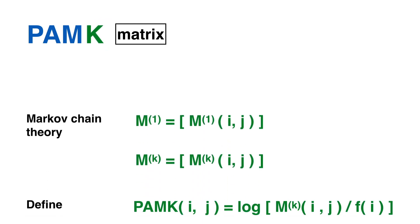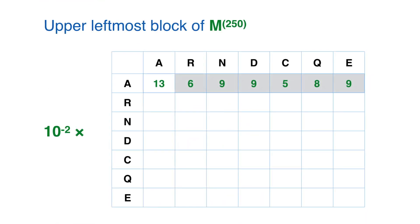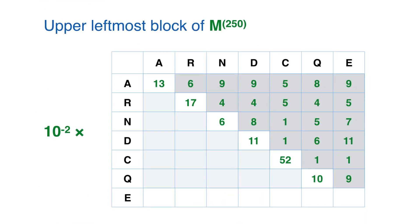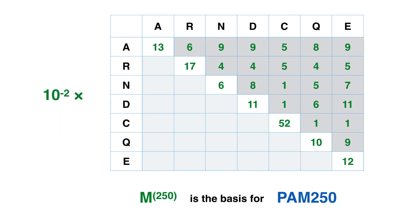In particular, in order to change k, it is necessary to multiply M1 by itself k times and redo the computations for transforming it into a log odds matrix. Here is the upper-leftmost block of M250, the result of multiplying M1 by itself k times. Matrix M250 is the basis for PAM250.